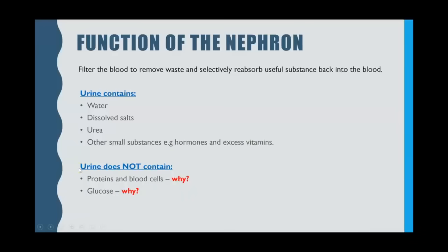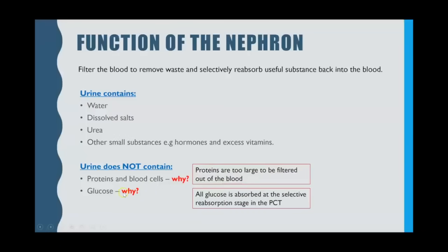In a healthy person you should never find proteins, blood cells, or glucose in urine — this is also GCSE knowledge. Proteins and blood cells are both too big to be filtered out so they always remain in the blood. Glucose does get filtered out, but all of the glucose is reabsorbed by active transport during selective reabsorption, which occurs in the proximal convoluted tubule, or PCT for short.